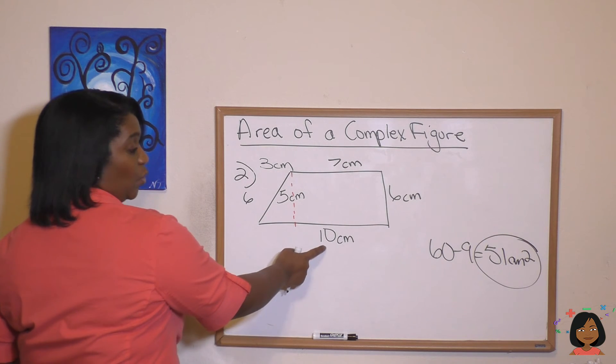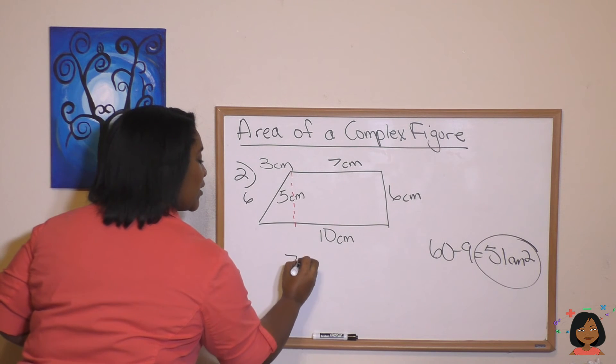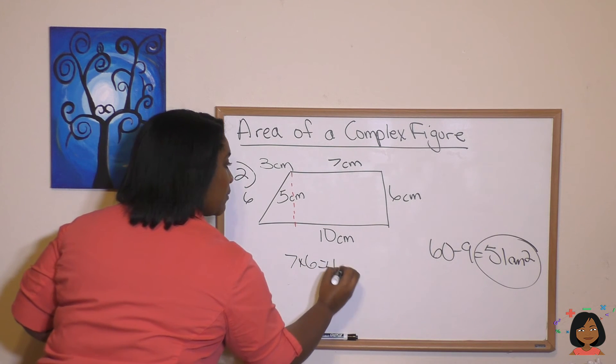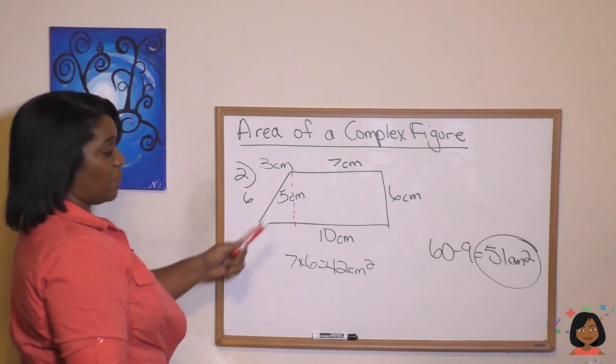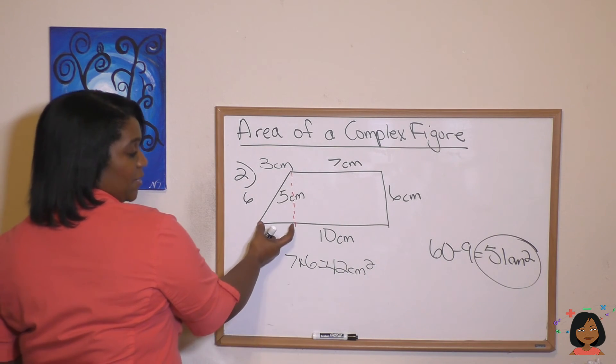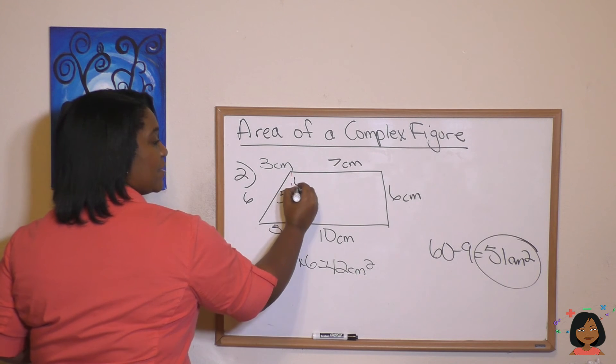Let's do this rectangle and this triangle and add them together. This is no longer 10. It's a 7. 7 times 6 is 42 centimeters squared. That's for the rectangle. And what about the triangle? Our base we know is 3. Our height we know is 6. There it is right there.